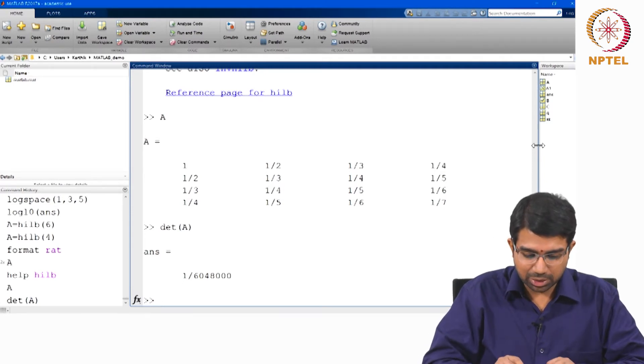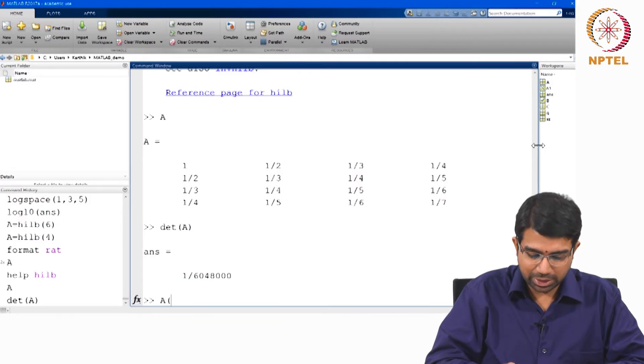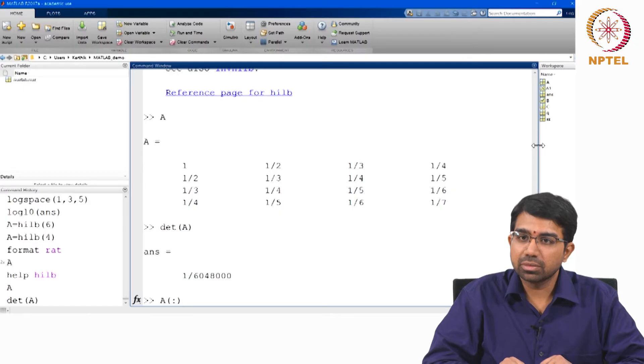But here, I am using this as a point to show you indexing. So now, if I say A colon, what does this give? Full matrix?